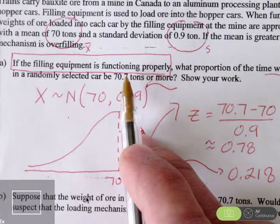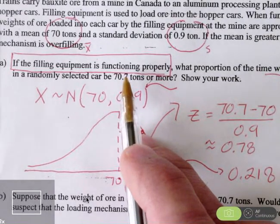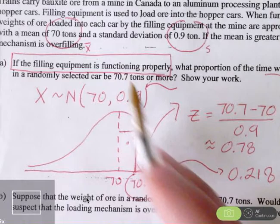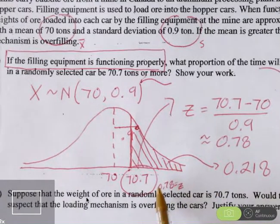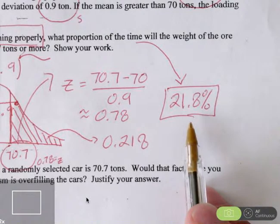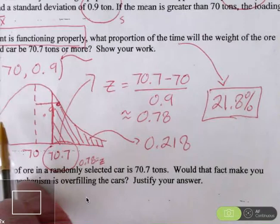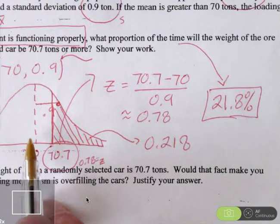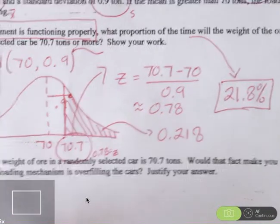Even though the mean is 70, sometimes we're going to get more than 70 tons in the hopper car. And that actually will happen 21.8%. That's a little more than 20%, a little more than one out of every five cars. That's actually reasonably likely even when the machine is functioning properly, even when we have a mean set at 70. We've answered part B then.